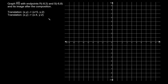Now the last topic: compositions. A composition is when you translate a figure two times. Here's the problem: graph segment RS with endpoints R(−8, 5) and S(−6, 8), and its image after the composition. We plot R at (−8, 5) and S at (−6, 8). We're going to move this line two times.